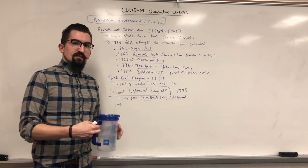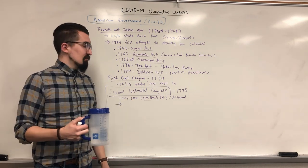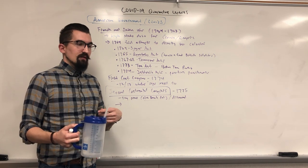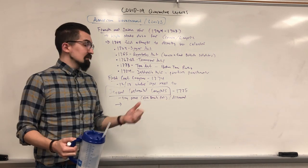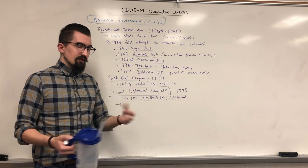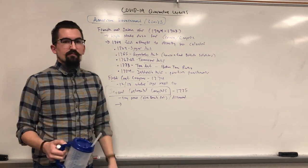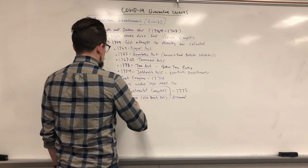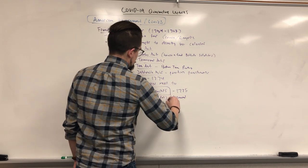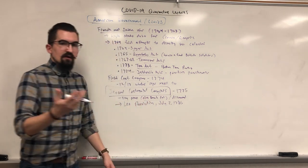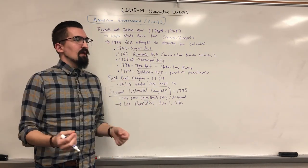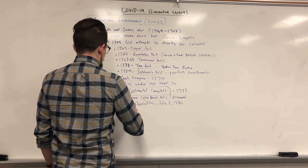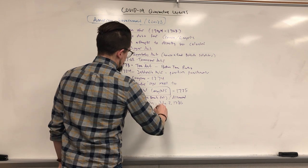King George III rejected the petition — didn't even read it — and declared the colonists traitors. British Parliament agreed and the fighting officially began. After considerable debate — since rebelling against the world's major military power risked lives, estates, and property — they passed the Lee Resolution on July 2nd, 1776, deciding to split. Then to officially inform both the British crown and the colonial people of what they were doing and why, they issued the Declaration of Independence on July 4th.